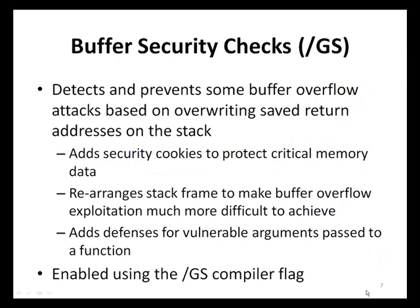The first Microsoft compiler defense to be discussed is the Buffer Security Checks, or /GS option. This compiler defense has been available since Microsoft Visual Studio .NET 2002 and injects security checks into the application code to detect and prevent certain stack-based buffer overflow attacks that overwrite the saved return addresses. Detection and prevention is accomplished through security cookies, rearranging parts of the stack frame, and adding code to protect vulnerable arguments passed to a function. To enable buffer security checks, applications must be compiled using the /GS flag, which is enabled by default by the Microsoft compiler.